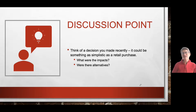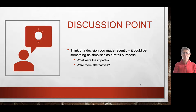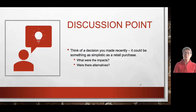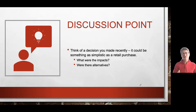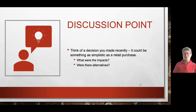I'd like you to pause here and think of a decision you made recently — it could be something fairly easy like a retail purchase. For example, I was buying some lotion the other day and I had some of these factors coming into how ethical my decision was. I was looking at how that product was made, where it was made, what the ingredients were, and how those ingredients were sourced. Think about something you bought recently — what were the impacts, were there alternatives, and how did you come upon your decision?